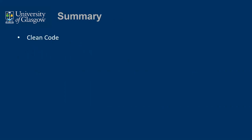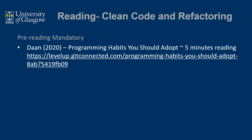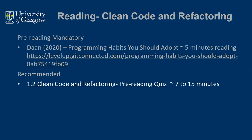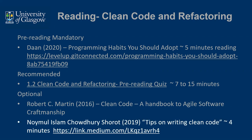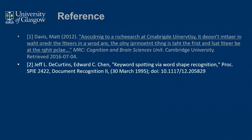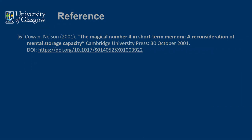In this lecture we've covered clean code, refactoring, and testing. As a reminder, there is pre-reading on programming habits you should adopt, hopefully readable in about five minutes, and it's recommended you do the pre-reading quiz. Optionally, there's Robert Martin's — Uncle Bob's — clean code book and tips on writing clean code, both of which should be quite useful. There are also references on working memory and related topics. Thank you very much and speak to you soon.